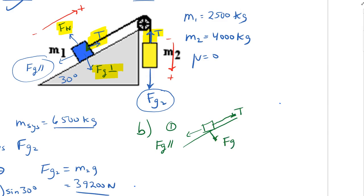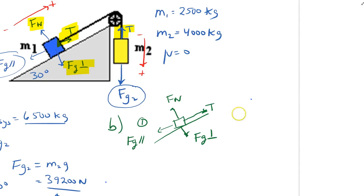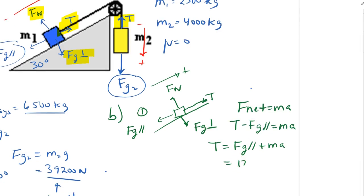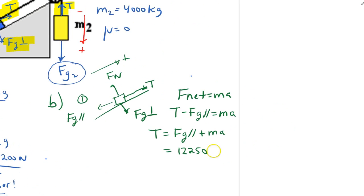Writing the F net equals MA statement with up the incline as positive: T minus Fg parallel equals mass times acceleration. Solving for T: T equals Fg parallel plus MA, which is 12,250 plus 2,500 times 4.15, giving us a tension of 22,650 newtons.